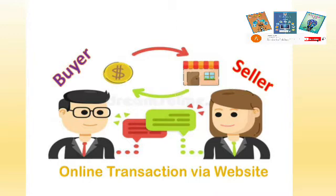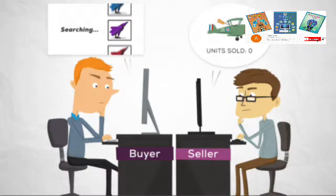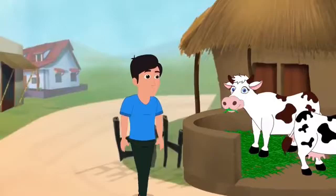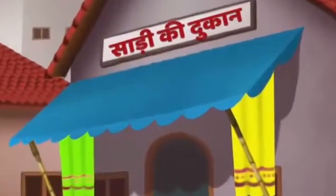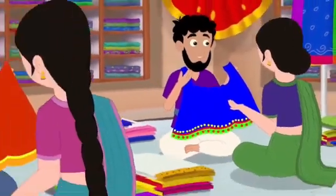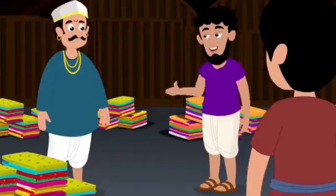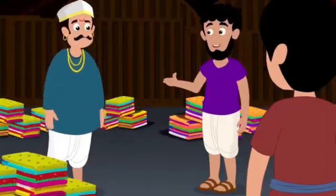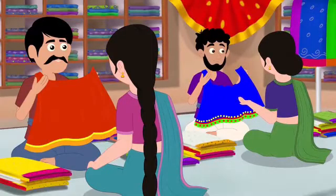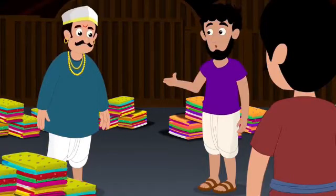There is another method of classifying e-commerce, and that is according to the parties involved in it. The parties here means the types of buyer, that is customer, and seller. We have seen Shyam's story in our last video. Shyam, a shop owner or businessman, was selling sarees to ladies, that is customers, and later started selling sarees to nearby retailers. Those were also businessmen. So Shyam selling sarees to ladies means business to customer, and Shyam selling sarees to retailers means business to business.